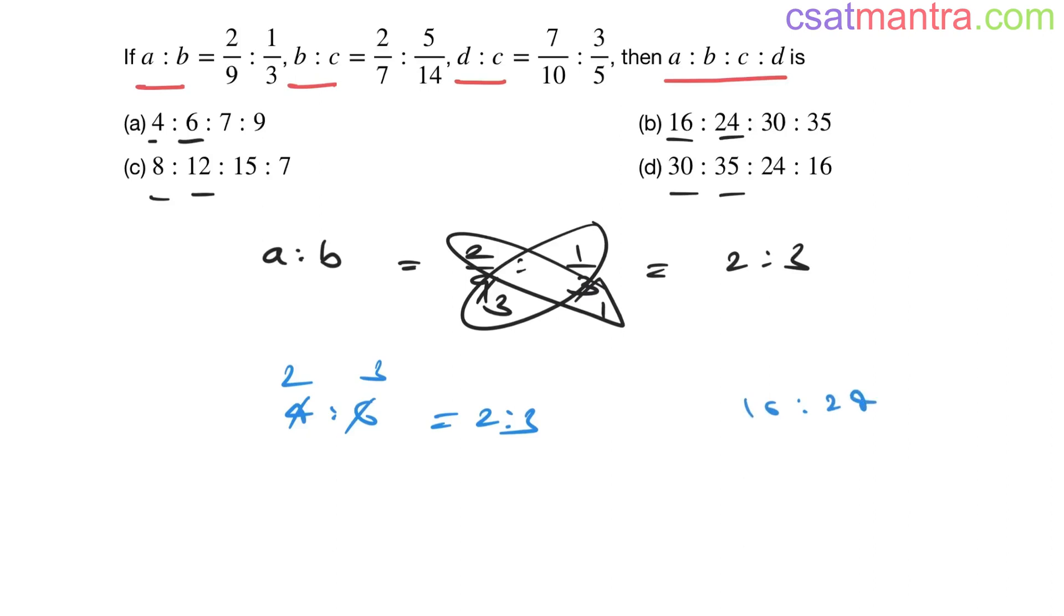So this is also 2 is to 3. Eight is to twelve - four twos are eight, four threes are twelve. This is also 2 is to 3.